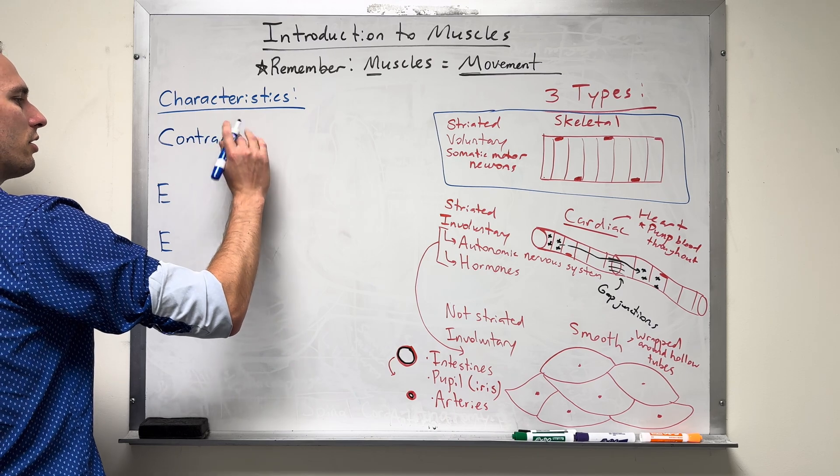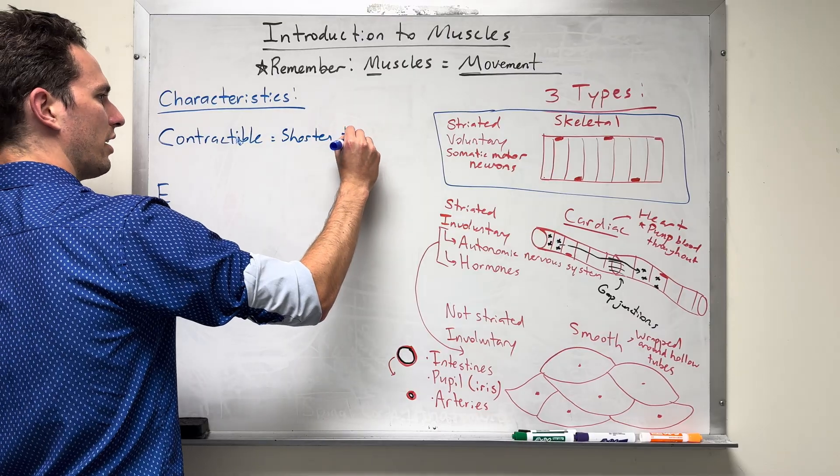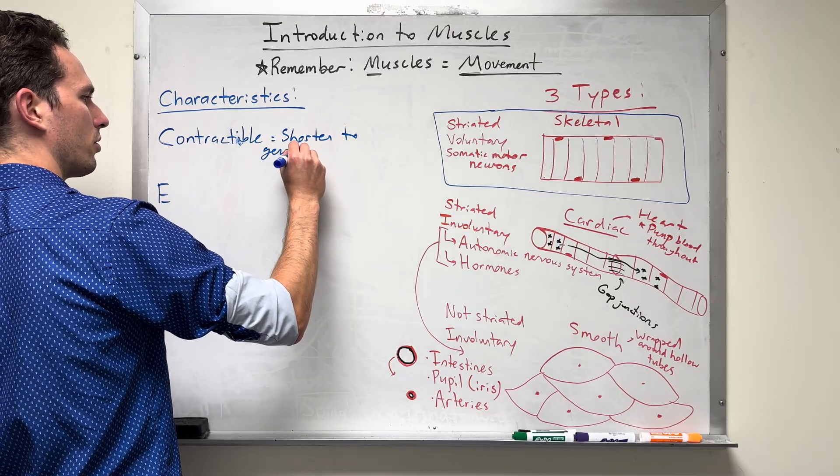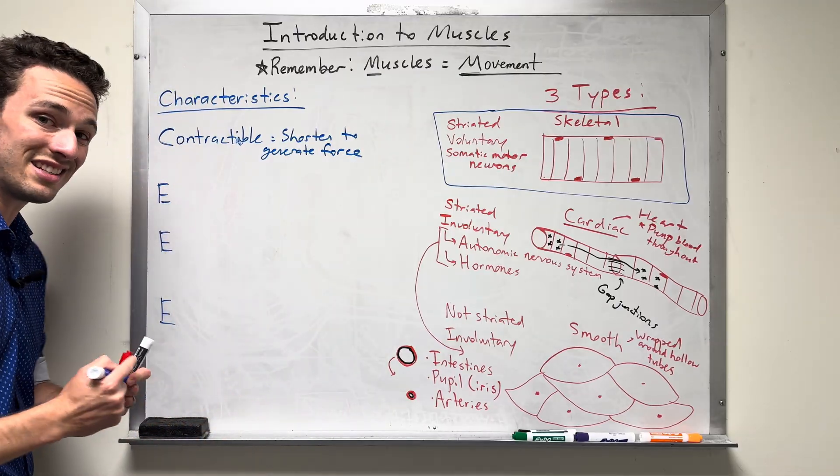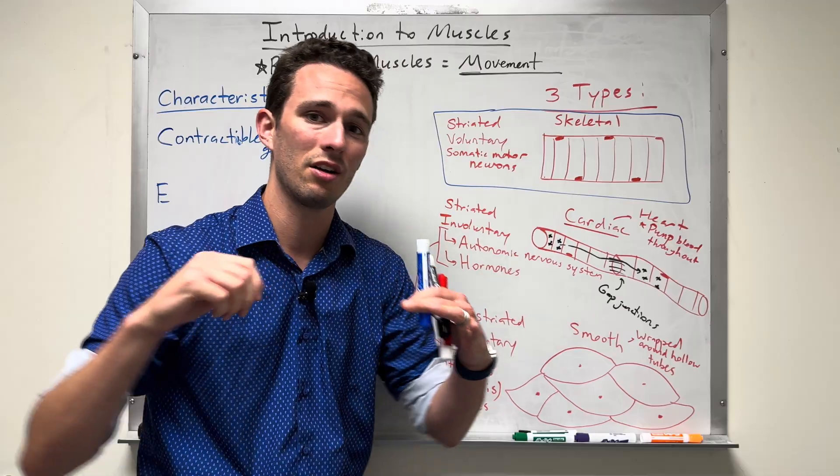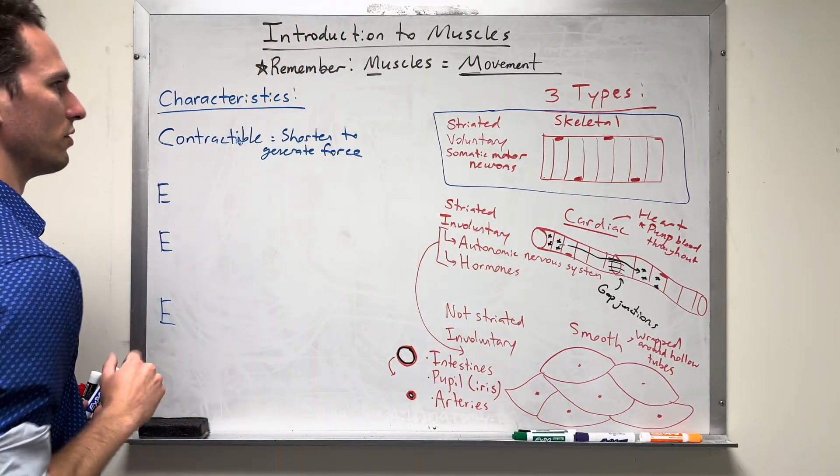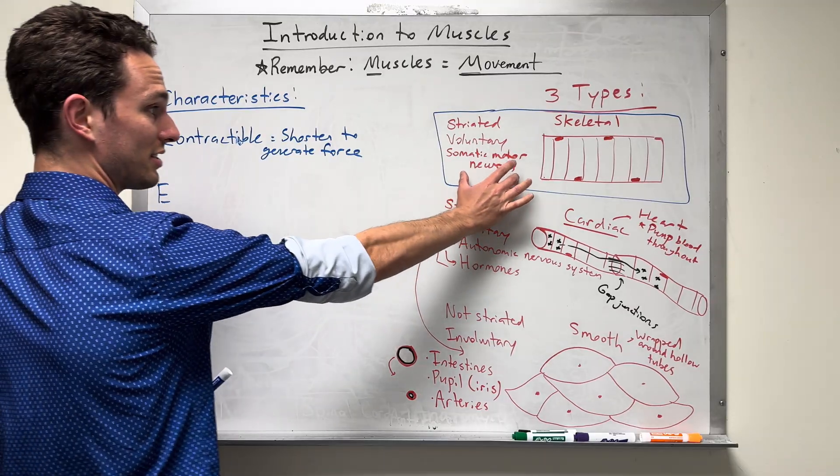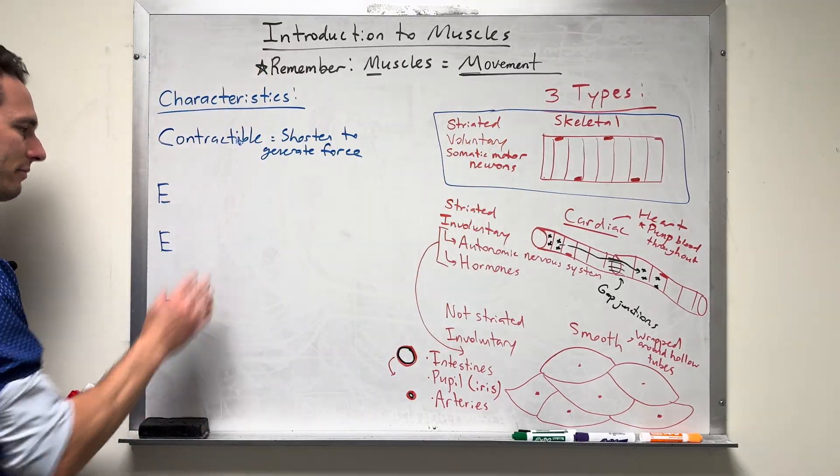I said earlier that it's able to shorten to generate force. There will be very specific proteins in your skeletal muscles called actin and myosin that will pull on themselves and allow those lines to close up, thus making a force, thus moving part of your body, specifically in this case, your bones. We know that skeletal muscle moves the skeleton.